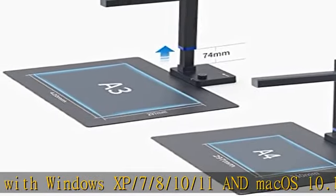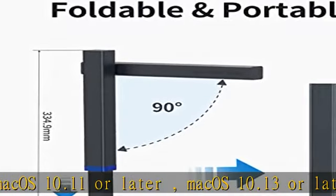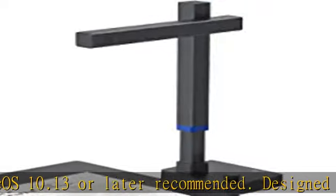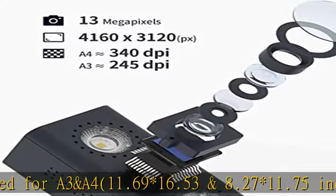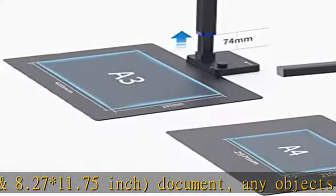Mac OS 10.13 or later recommended. Designed for A3 and A4 (11.69 x 16.53 and 8.27 x 11.75 inch) documents. Any objects smaller than A3 size can be scanned with ultra-fast scanning speed, less than one second per page. Perfect device to scan flat papers.